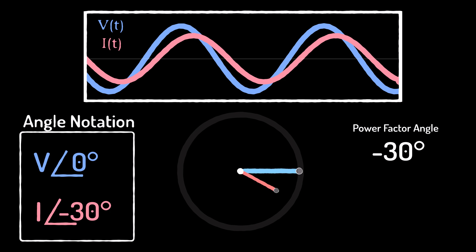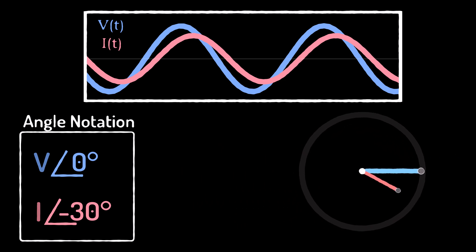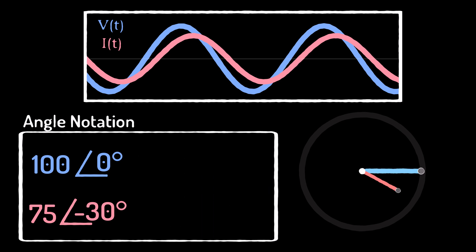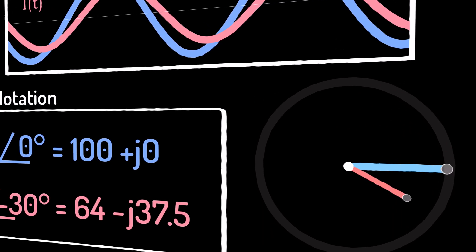It always confused me as a student to see that current can be expressed in rectangular notation. So what does 64 minus j37.5 actually mean?